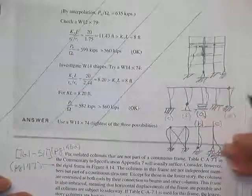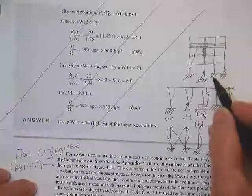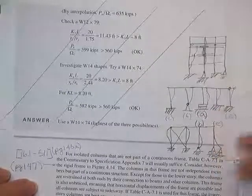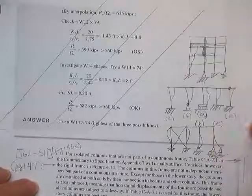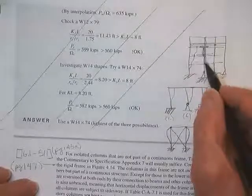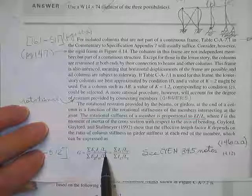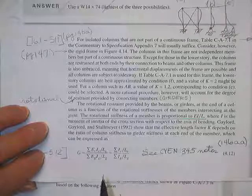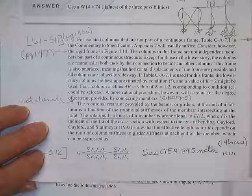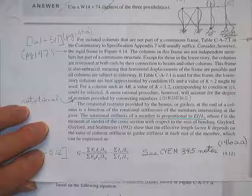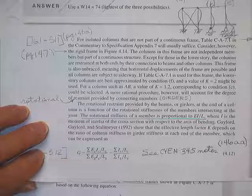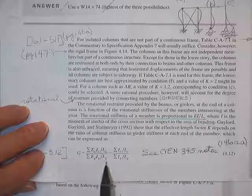In multi-story frames, rather than having a nice pin — which you really can't make and probably don't even want — and rather than a nice fix, which you can't really make but wish you could because it would make the column shorter effectively, these end restraints are due to the girders running across the columns. They are supported by EI/L of the members entering the joint. The column always wants to be pinned-pinned; you have to restrain it. Then the girders also come in.